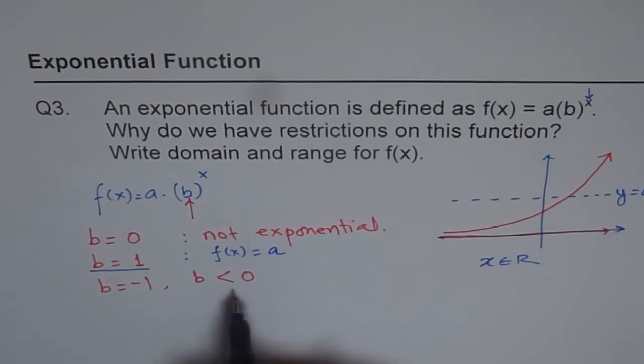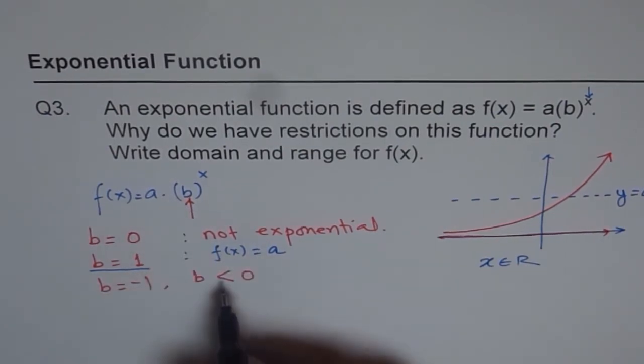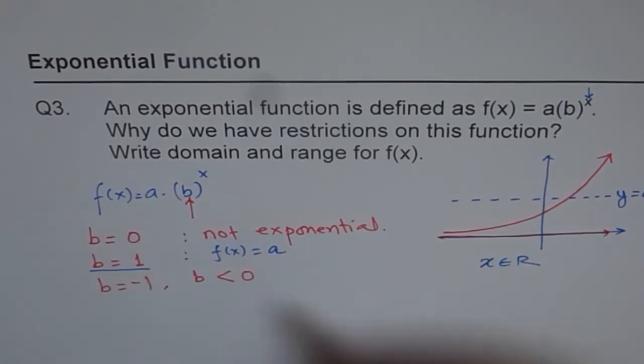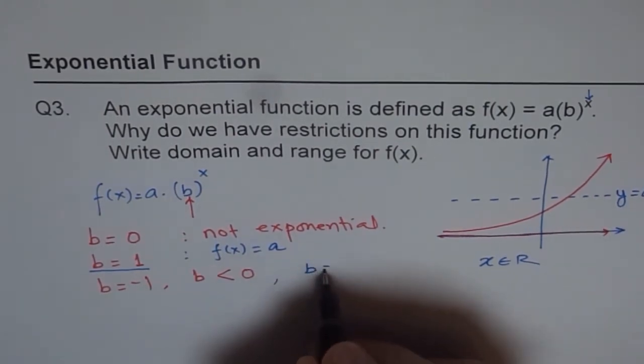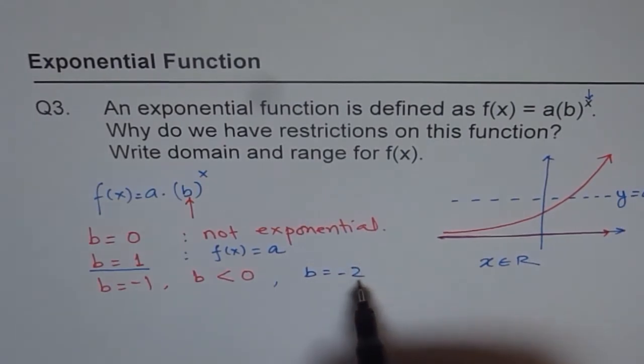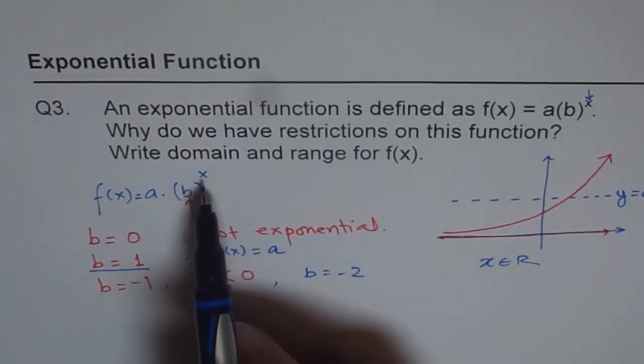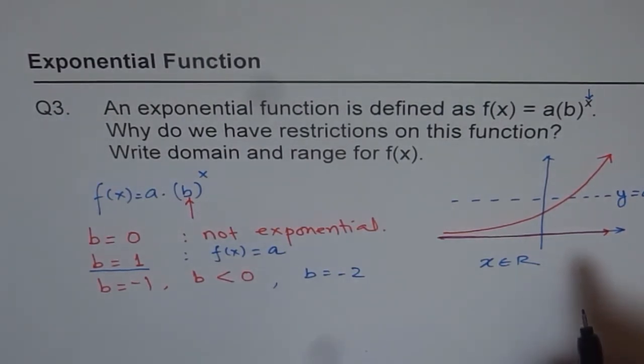How about when b is negative? When b is negative, then what happens? Let us take a value, for example, b as minus 2. Let us say b equals to minus 2. Then, if we have an even power, we get positive number. If we get odd power, we get negative number.